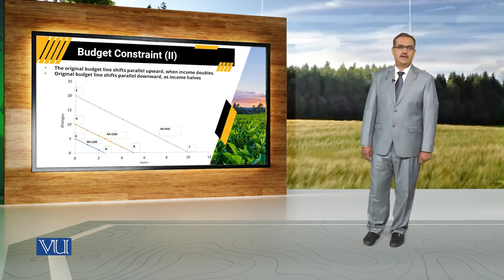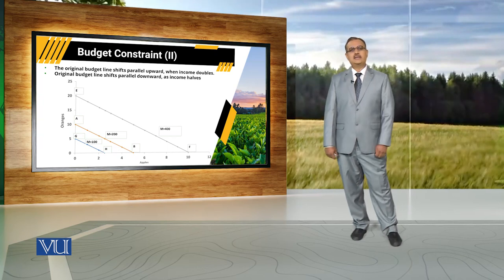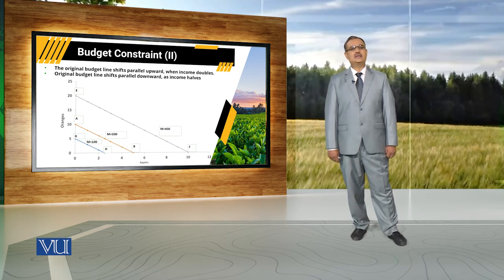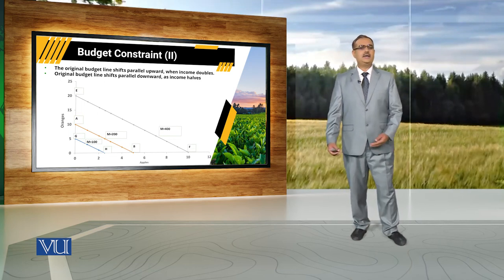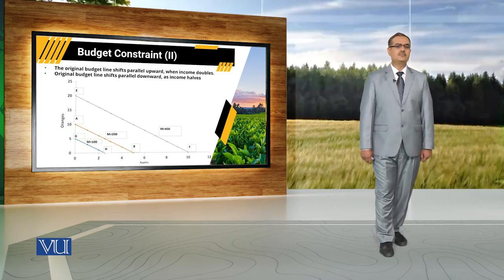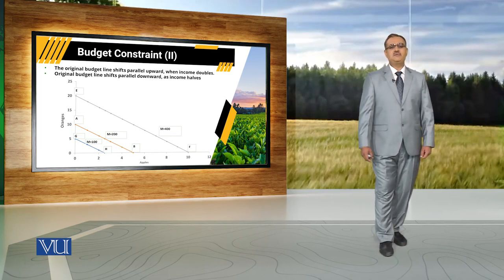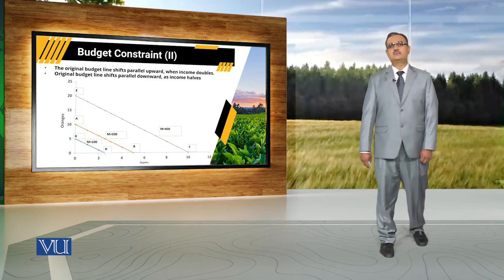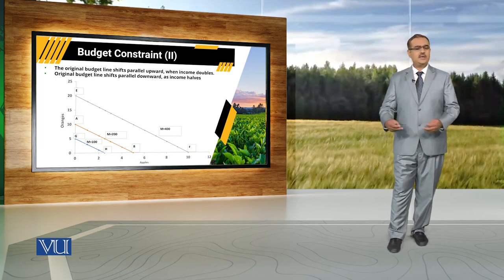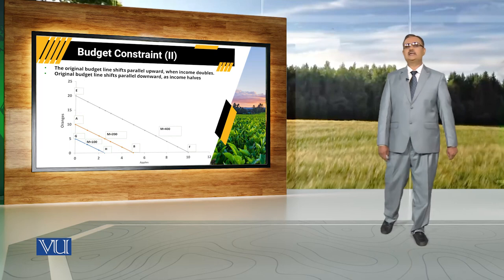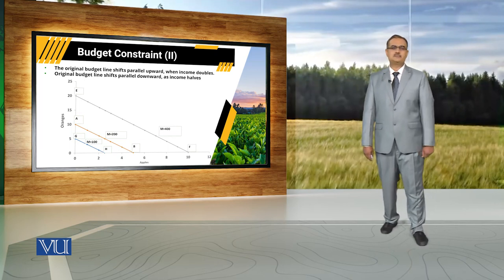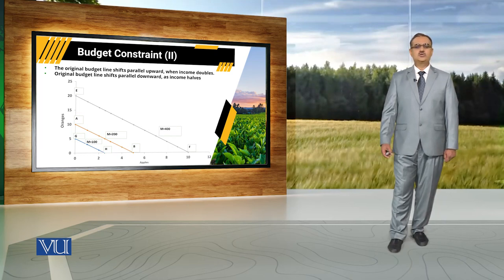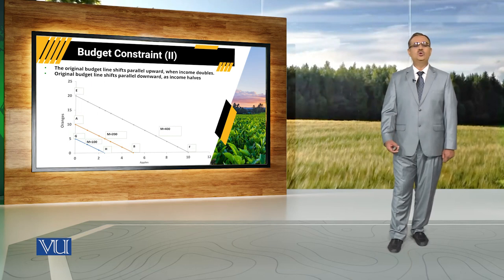With reference to the original budget constraint, if we assume income of the consumer is halved again, the ability of the consumer to buy different quantities of apples and oranges will decrease. If income becomes 100 rupees, the consumer must allocate this 100 rupees on apples and oranges, and the budget constraint will shift from AB to GH.